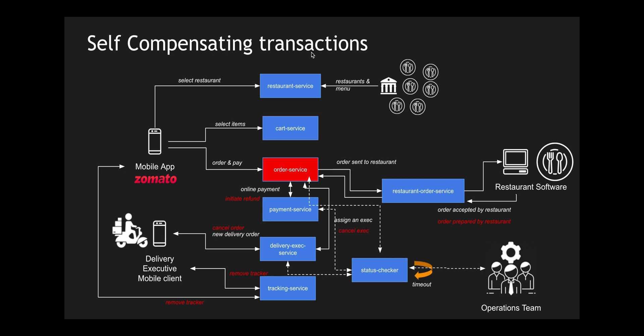There will be an operations team looking at the status checker dashboard and reacting to events. For example, if an order gets stuck for a long time with the restaurant, the operations team is notified and they can call the restaurant or the delivery executive. You need a combination of self-compensating transactions — identifying anomalies in the system automatically — and notifying the operations team for things the system itself cannot solve. This is how you handle failures in a saga architecture pattern with compensating transactions.